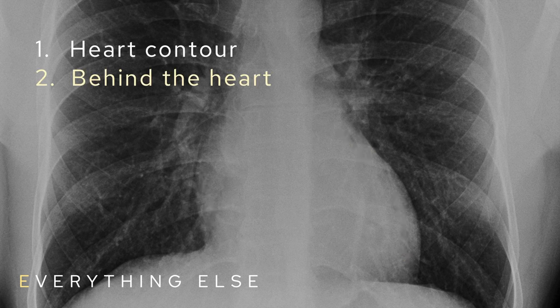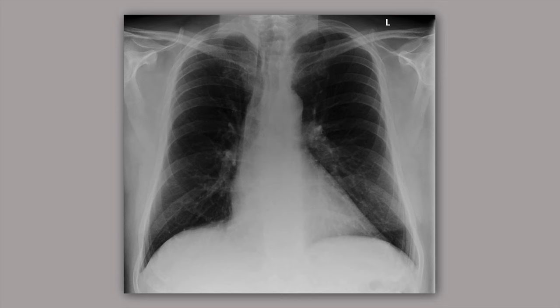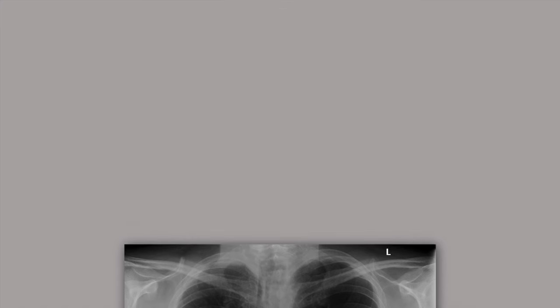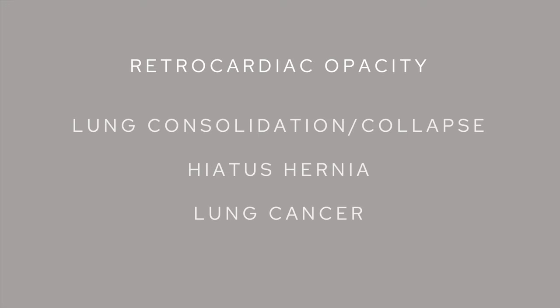Also look behind the heart to see that the density looks the same on either side of the spine — compare right to left. If the right side looks far more dense than the left, you're thinking about lung consolidation or collapse. You might also see a hiatus hernia — look for a fluid level behind the heart. Lung cancers can also manifest as a retrocardiac opacity. In one such case, the opacity behind the heart was actually due to a dilated oesophagus, confirmed on CT.